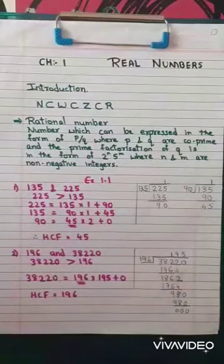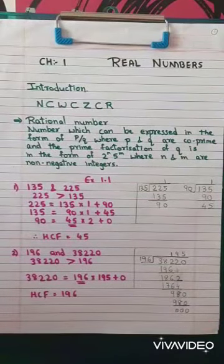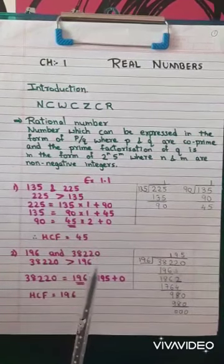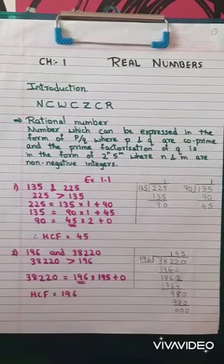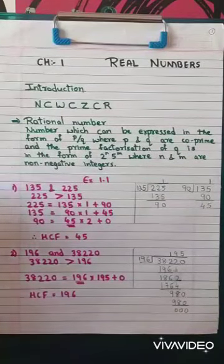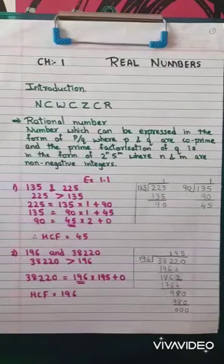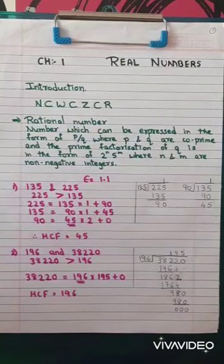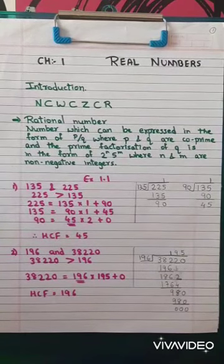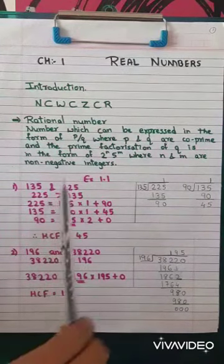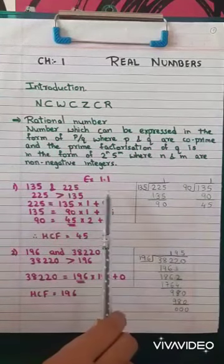Now, you have already learned about how to find HCF. In this chapter, we are going to learn two methods to find HCF. The first method is the prime factorization method. Another method is Euclid's division algorithm method. We are going to start with Exercise 1.1.